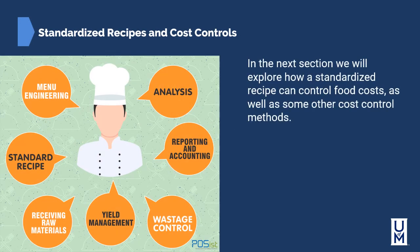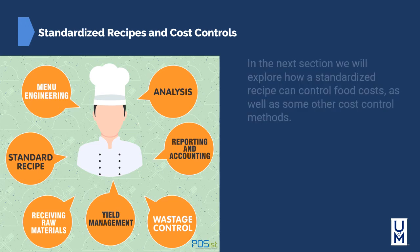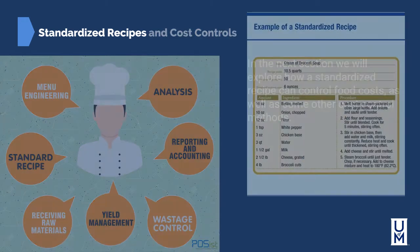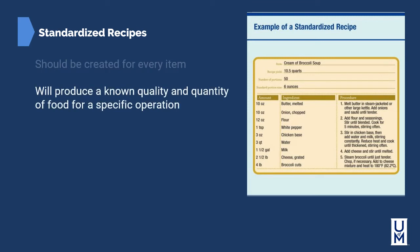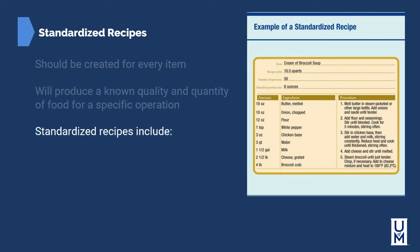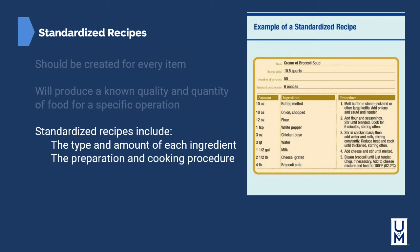In the next section, we'll explore how standardized recipes can control food service costs, as well as some other cost control methods. Standardized recipes should be created for every item on your menu, whether you are doing ranch dressing, cream of broccoli soup, or a steak and potato entree. They produce a known quantity and quality of food for a specific operation. Standardized recipes include the type and amount of each ingredient, the preparation and cooking procedure, and the yield and portion size.